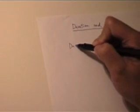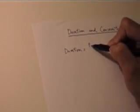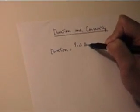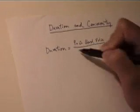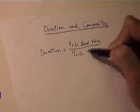Today we will talk about duration and convexity. We know that duration is actually telling us what is the percentage change of the bond price, provided a percentage change of the yield.